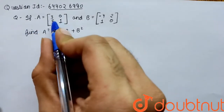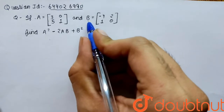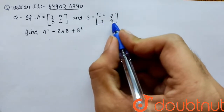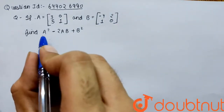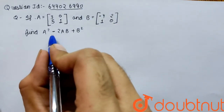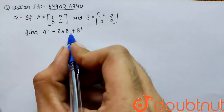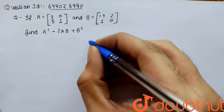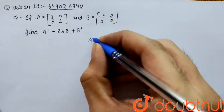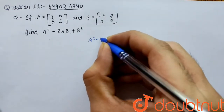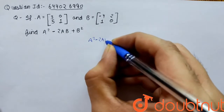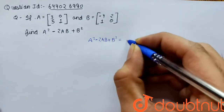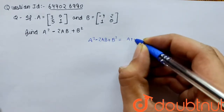The given question is: if A equals [3, 5; 0, 1] and B equals [-4, 1; 2, 0], we need to find A² - 2AB + B².